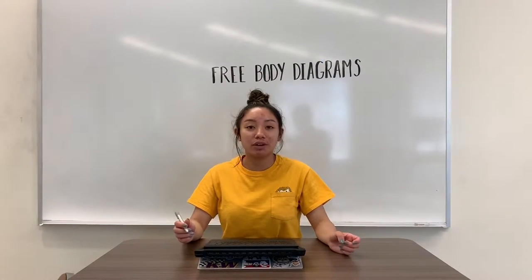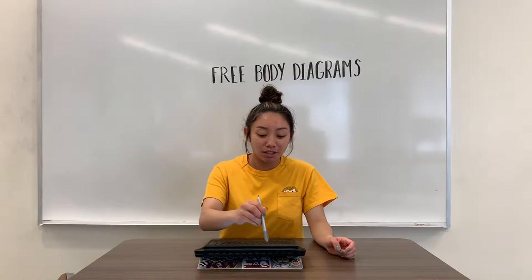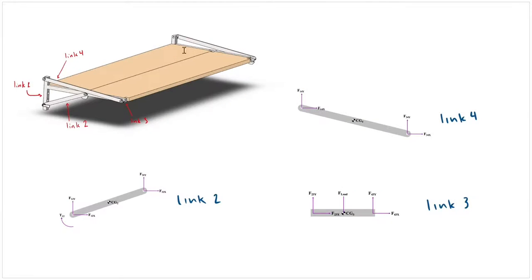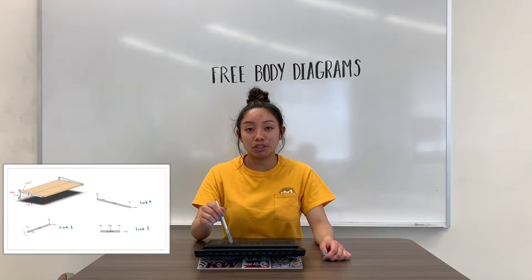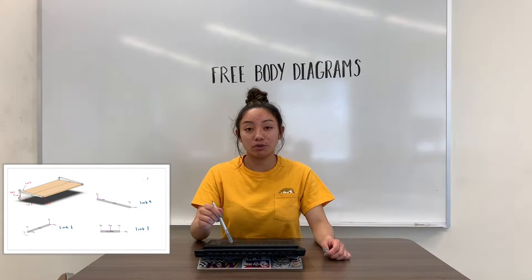Hi, my name is Janelle and I'm going to be going over the free body diagrams. So, in our assembly here, we have all of our links labeled here. This is our free body diagram for link 2, our free body diagram for link 3, which is our shelf with the load applied to link 3, and then this is our free body diagram for link 4. And these are all going to be important so that we can set up our calculations for the force analysis.